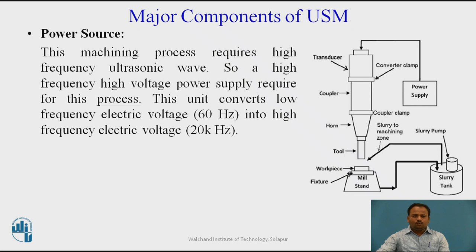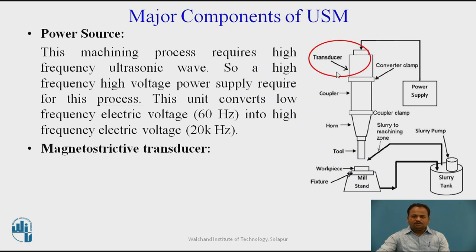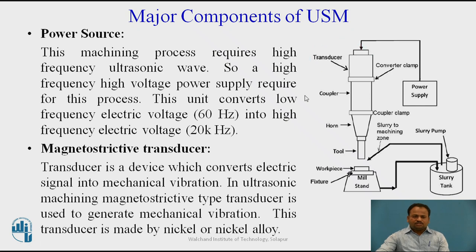This unit converts low-frequency electric voltage, i.e. 60 Hz, to 20 kHz high-frequency electric voltage. Next is the magnetostrictive transducer. This transducer is a device which converts an electrical signal into mechanical vibration — 20,000 vibrations per second are generated. In ultrasonic machining, a magnetostrictive type transducer is used to generate mechanical vibration, and this transducer is made of nickel or nickel alloy.